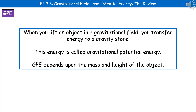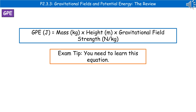The last thing we need to consider is gravitational potential energy. When we lift up an object in a gravitational field, we're transferring energy to a gravity store. The higher off the ground we lift it, the more energy we transfer to that gravity store — we refer to this as gravitational potential energy. Gravitational potential energy depends on two main things: the mass of the object and the height of the object. A third factor is gravitational field strength, which is constant on a single planet but will change if we're comparing different planets.